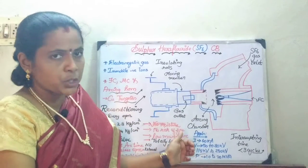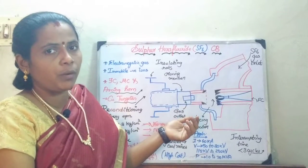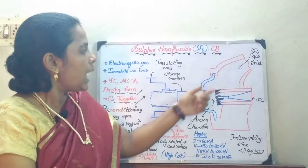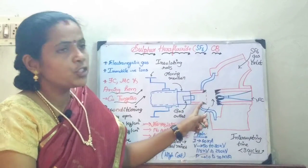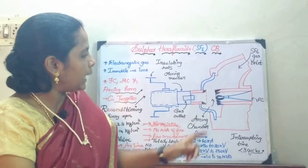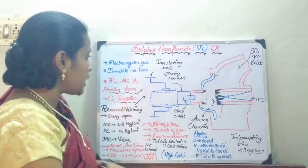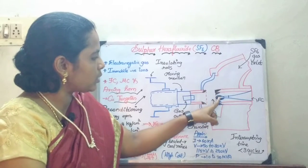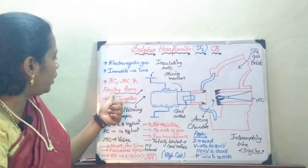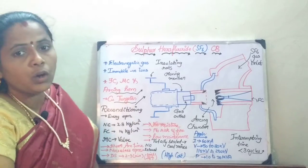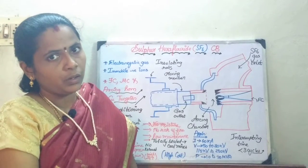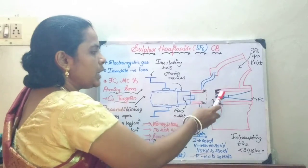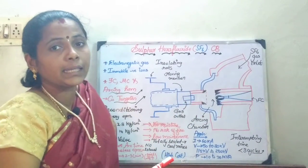Moving on to the construction, this SF6 circuit breaker consists of a fixed contact, a moving contact, and an arcing chamber. Here, a special feature is that the moving and fixed contacts are going to be coated with copper tungsten. You are also going to have a special device called the arcing horn.